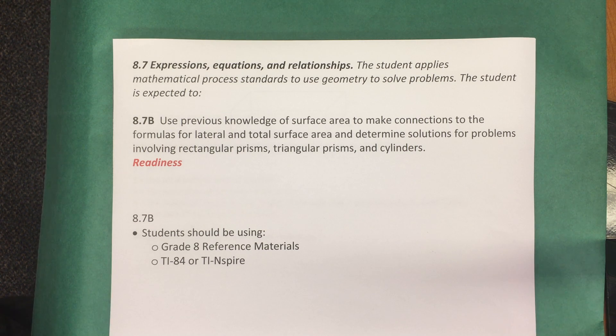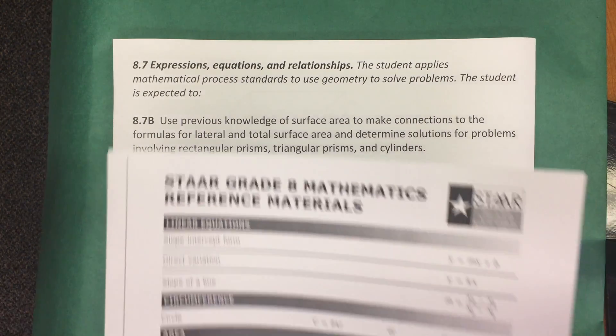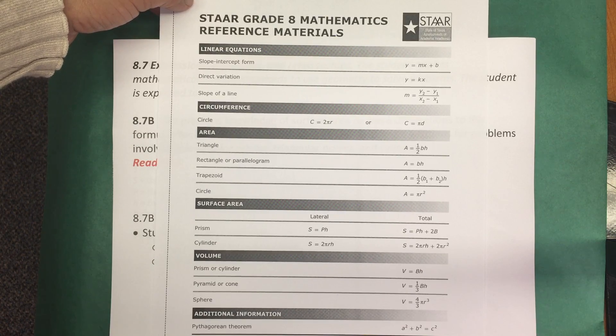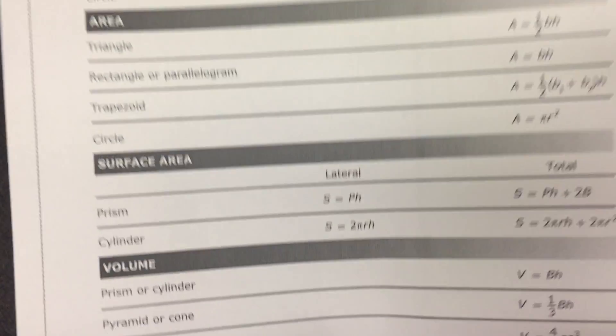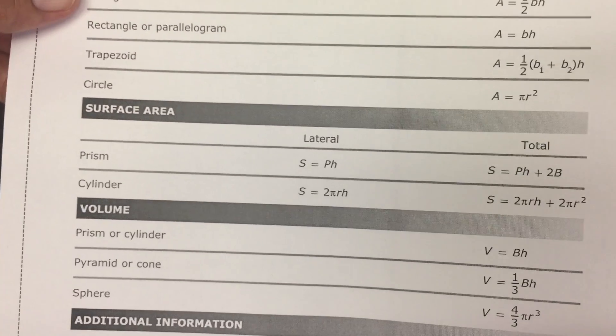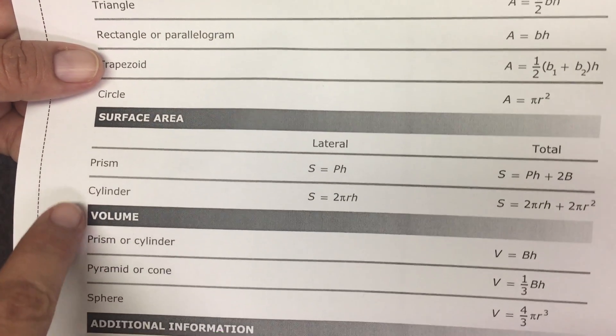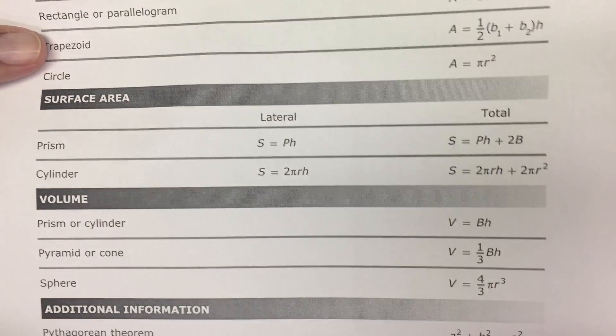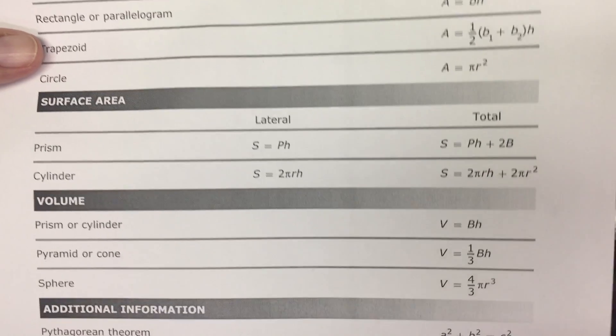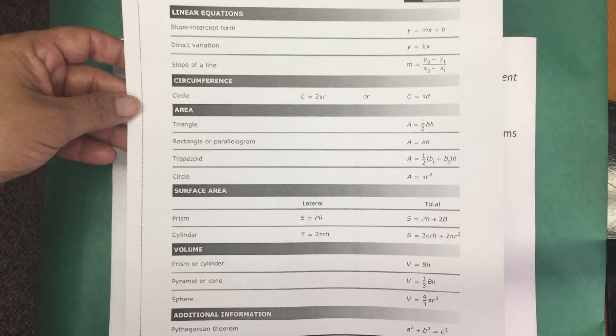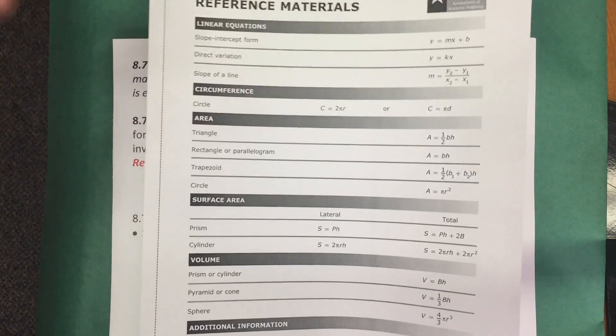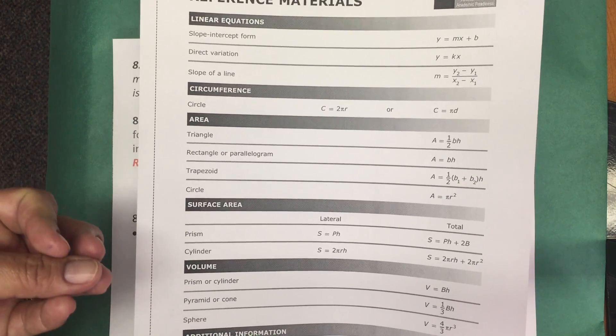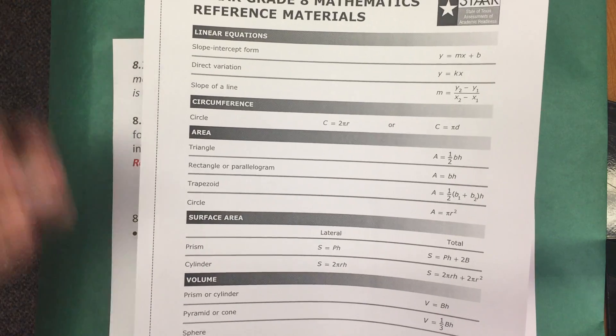When you are teaching the standard to your students, it is important to have available for them the reference material sheet from the STAAR Grade 8 mathematics assessment. On this sheet, the formula for surface area is provided for both the prism and a cylinder. The lateral surface area and total surface area formulas are provided for both. We want the students using this reference material sheet so that on the day of the assessment they're comfortable with this reference material sheet and know how to read it and use the formulas on there.